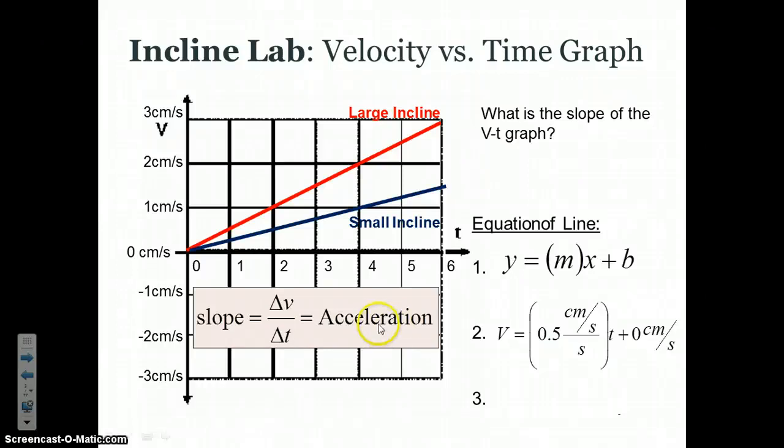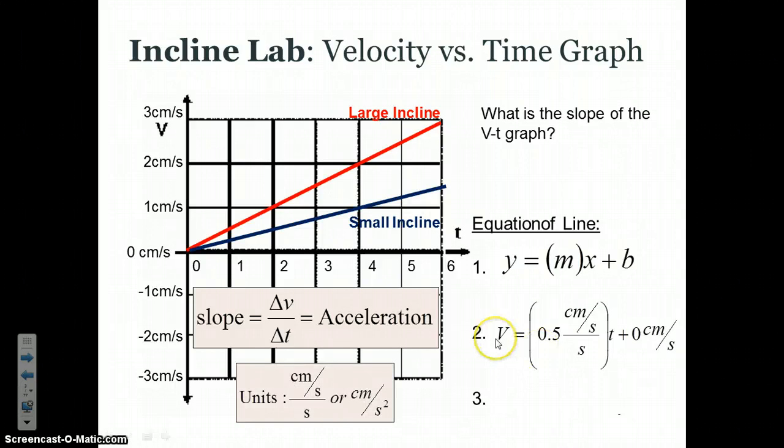So the acceleration is how much your velocity changes each second, and the slope of our line tells us that. When you look at the units of acceleration, you get centimeters per second for each second, or how much the velocity changes for each one second of time. You simplify that, you get two seconds on the bottom, and it's the same thing as centimeters divided by seconds squared.